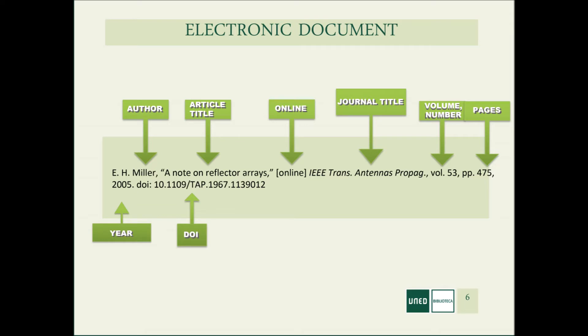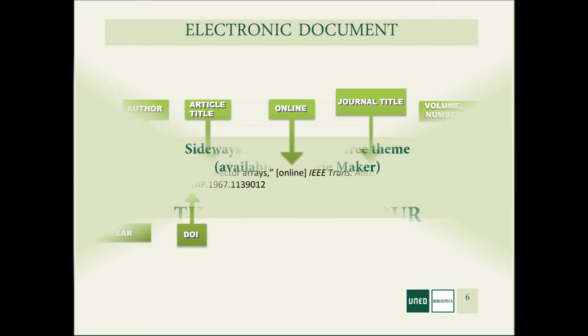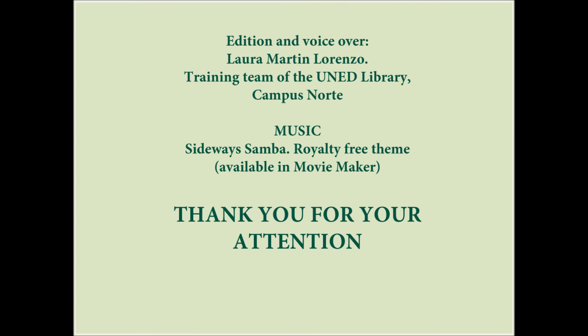And to finish, we have an electronic document, which is as simple as adding 'online' in brackets. So we have: author, article title in quotation marks, [online] in brackets, journal title in italics and abbreviated, volume number, pages, year, and DOI, which allows us to locate the article.